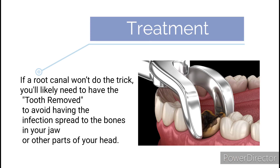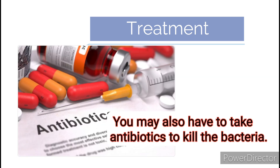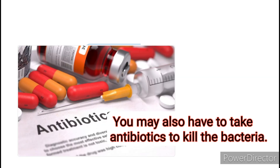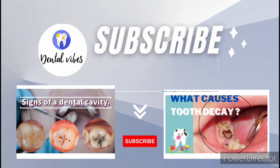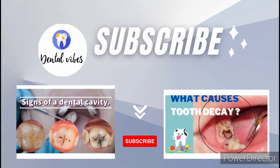Treatment: if a root canal won't do the trick, you'll likely need to have the tooth removed to avoid having the infection spread to the bones in your jaw or other parts of your head. You may also have to take antibiotics to kill the bacteria. Thanks for watching — to understand more about tooth decay, check out my previous videos.